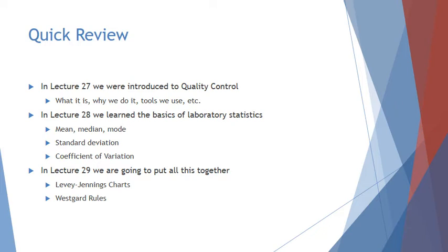A quick refresher of the last two lectures. Lecture 27 introduced us to quality control — what it is, why we do it, how we do it, and what tools we use. Lecture 28 gave us basic knowledge of laboratory statistics, namely calculating mean, median, and mode, as well as standard deviation and coefficient of variation. Today in lecture 29, we are going to put all of this together and talk about Levy-Jennings charts and Westgard rules and how to interpret and use them to monitor your QC.